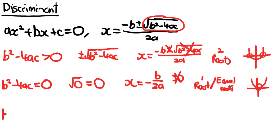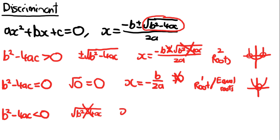However, what happens if b squared minus 4ac is actually negative? If we try to square root a negative number, it doesn't work — we can't square root a negative number. So the quadratic formula breaks down completely. That means we have 0 roots, because the quadratic formula is what gives us the roots, and it can't give us any roots when b squared minus 4ac is less than 0.